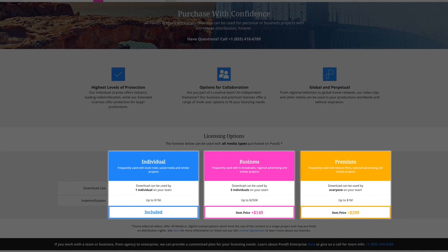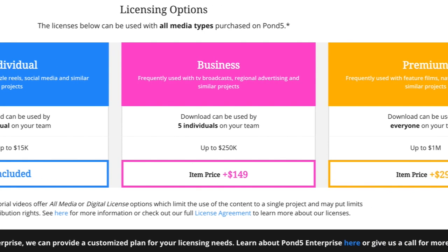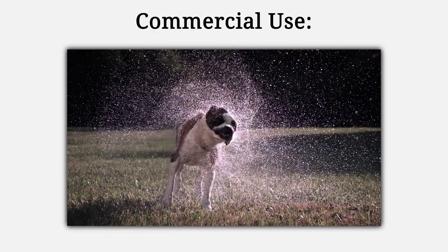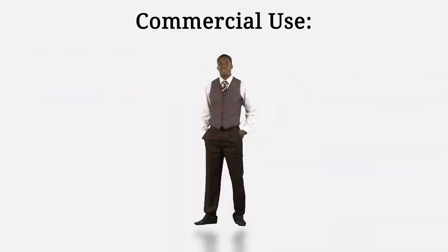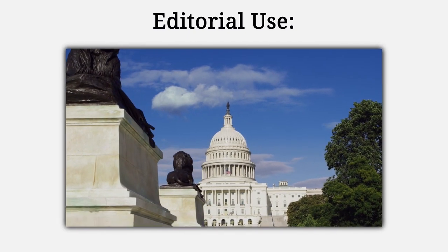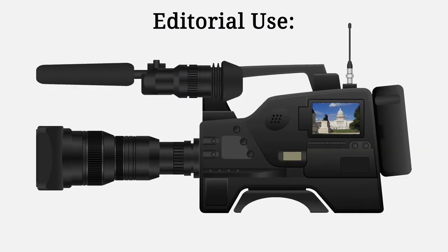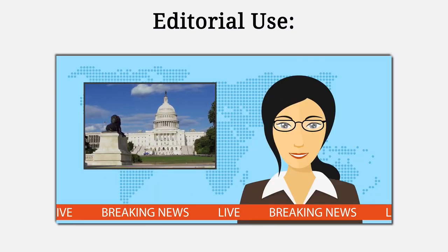Licensing can be confusing. Pond5 provides clear licensing options in plain English, giving creators the rights they need to use the content anywhere, anytime, worry-free. Commercial use means you're using the content for the benefit of yourself, your company, or your client — in projects such as advertising, promotional, or merchandising.